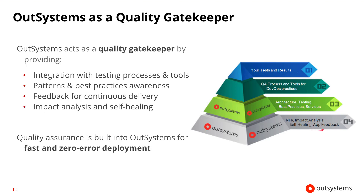OutSystems also supports application feedback. Business users and developers are able to use their tablets, smartphones, or desktops to provide feedback directly to the development team from inside the app, and let them know exactly what they would like changed. OutSystems can also detect patterns and best practices, and even anti-patterns, and warn you if they might have an impact on your application. This allows you to determine whether the implementation was intentional or not, and if you wish to continue using it.